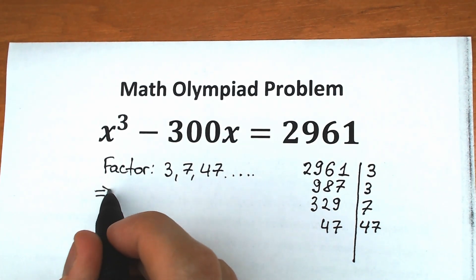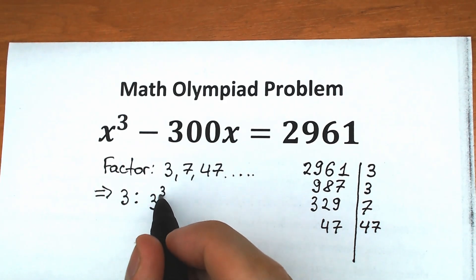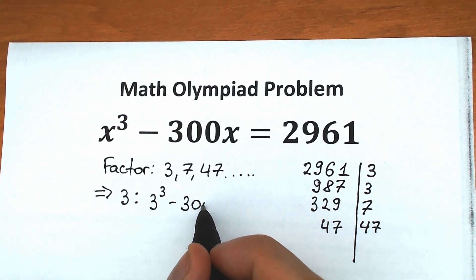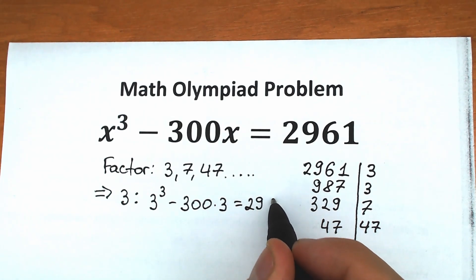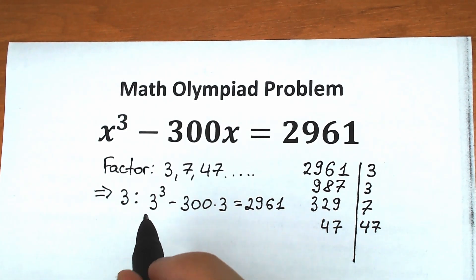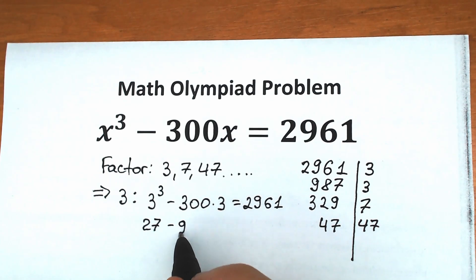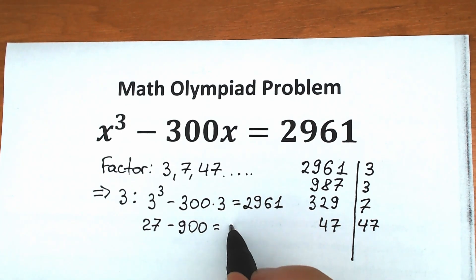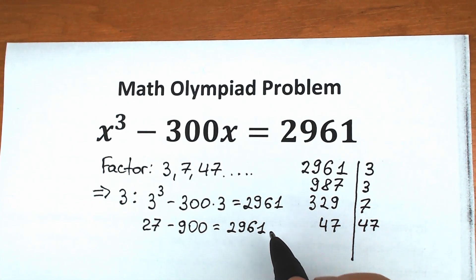Let's start with 3. If we check x equals 3: 3 cubed minus 300 times 3 equals 2,961? We get 27 minus 900 equals 2,961, which is absolutely not correct. So we reject x equals 3.